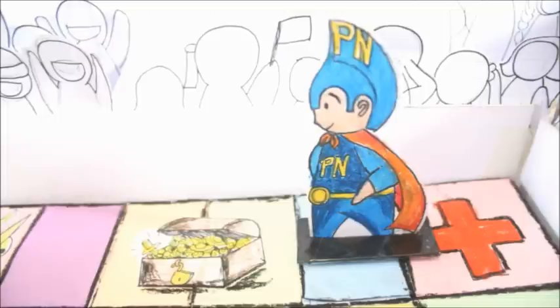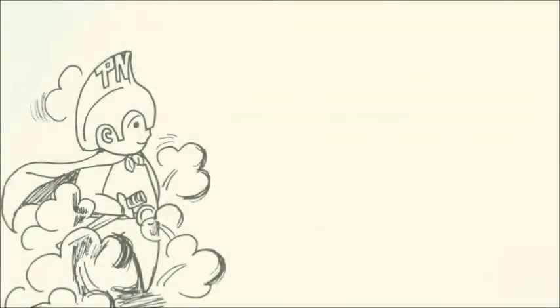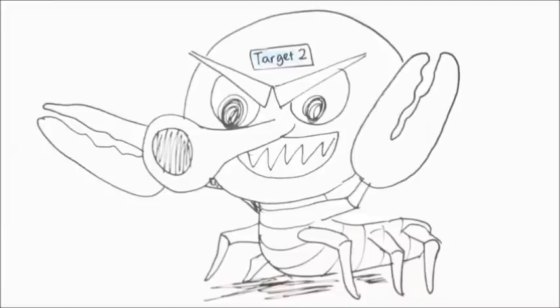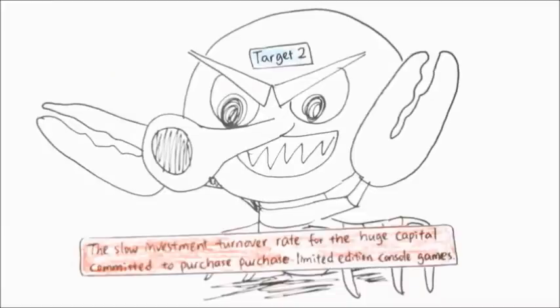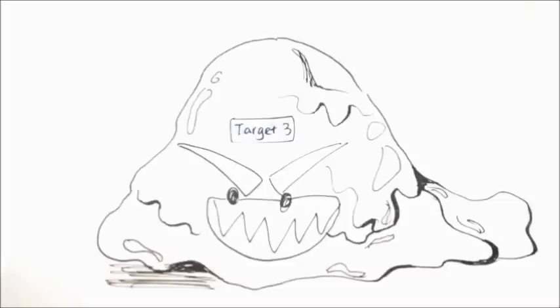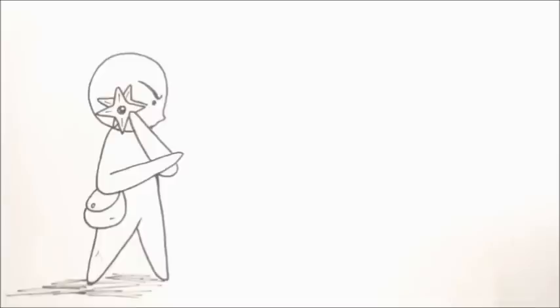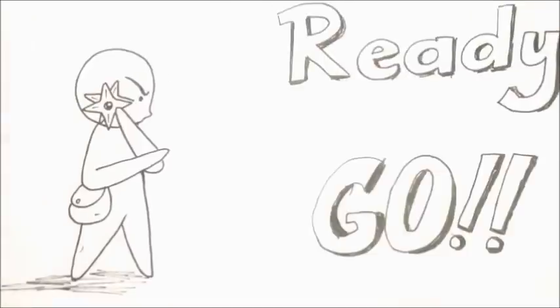You are now at the Risk Battlefield. Destroy the following targets to proceed. Target one: the low current capacity of the kitchen and its inability to cope with increasing demands from customers. Target two: the slow investment turnover rate for huge capital committed to purchase limited edition console games. Target three: the possible imitation of our strategies by competitors. Ready, go!